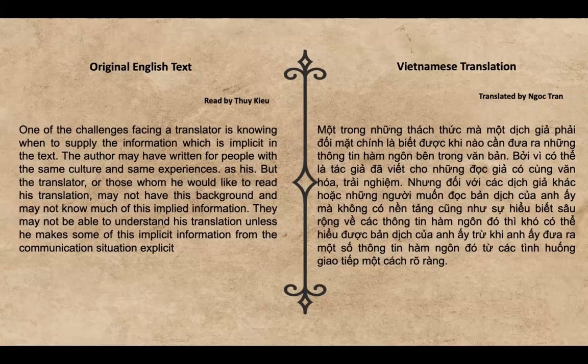Một trong những thách thức mà một dịch giả phải đối mặt chính là biết được khi nào cần đưa ra những thông tin hàm ngôn bên trong văn bản. Bởi vì có thể là tác giả đã viết cho những độc giả có cùng văn hóa và trải nghiệm. Nhưng đối với các dịch giả khác hoặc những người muốn đọc bản dịch mà không có nền tảng cũng như sự hiểu biết sâu rộng về các thông tin hàm ngôn đó, thì khó có thể hiểu được bản dịch trừ khi tác giả đưa ra một số thông tin hàm ngôn từ các tình huống giao tiếp một cách rõ ràng.